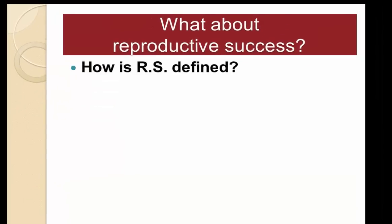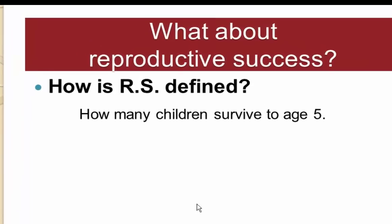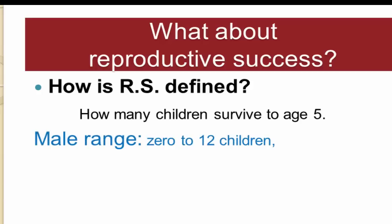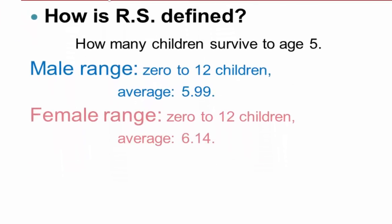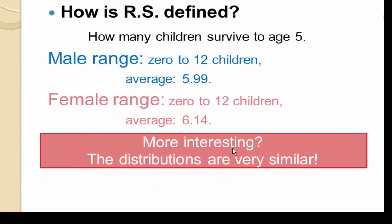Borgerhoff Mulder defined reproductive success as how many children survived to age five. The male range was 0 to 12 with an average of 5.99; the female range was 0 to 12 with an average of 6.14. Again the range and average for males and females are very similar. Just as with fertility, the distributions were very similar and couldn't be sorted out from what might result from random chance.